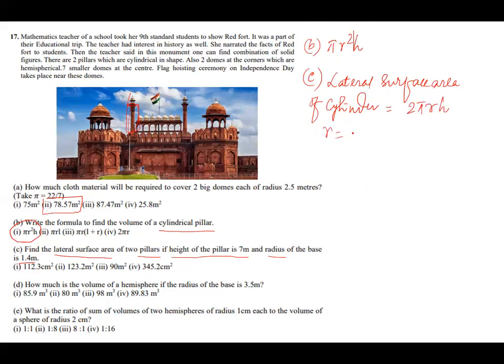So we will get lateral surface area of cylinder. What is the formula? It will be 2 pi r h. What is r here? Radius is 1.4 meter and h is equal to 7 meter. So it is very easy. So 2 times 22 by 7 into radius 1.4 into height 7. So you can cancel 7 and 7. Just you multiply now. It will be 44 multiplied by 1.4. So how much it will be? 14 times 4, 56.